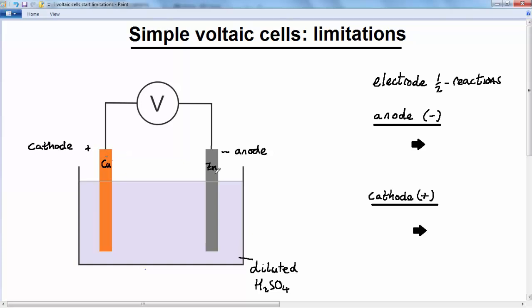So as we learned in the last lesson, the more reactive metal, that's the zinc, becomes oxidized forming zinc 2+ ions which go into solution and so loses two electrons.